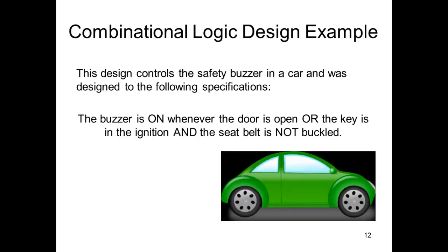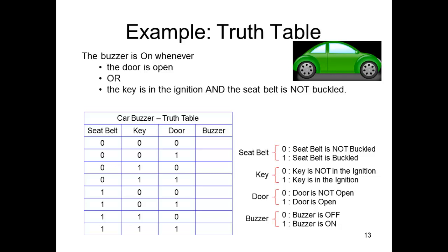I'm going to go over a quick example here of the kind of logic design we could do. A safety buzzer in a car might look something like this. The buzzer is on whenever the door is open or the key is in the ignition and the seat belt is not buckled. When we look at that, we have a couple of reasons to turn the buzzer on. The buzzer is the output. The door is open, we're going to turn it on, or we have two things together: the key's in the ignition and the seat belt's not buckled.